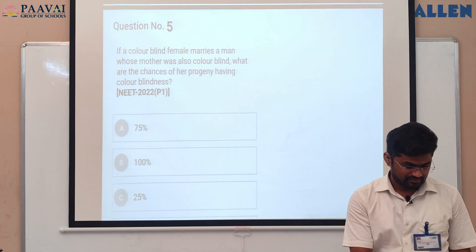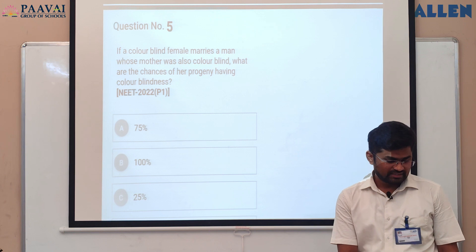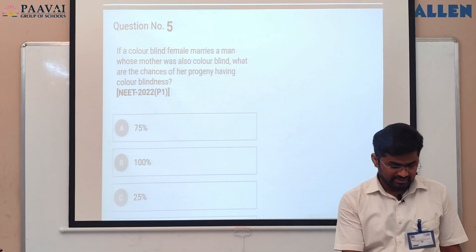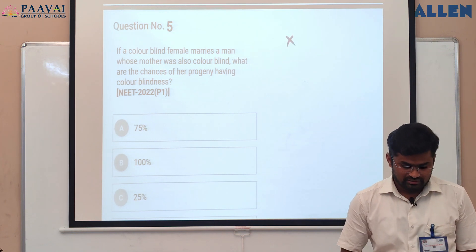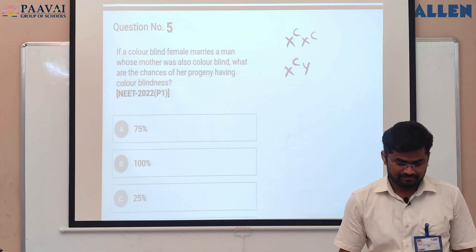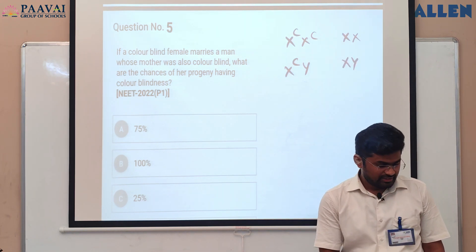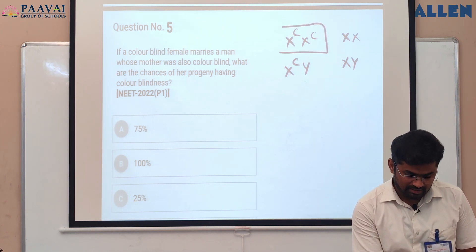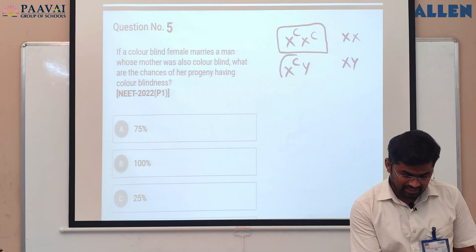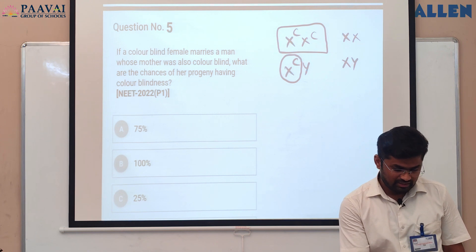Question number five: if a colour blind female marries a man whose mother was also colour blind, what are the chances of her progeny having colour blindness? For colour blindness, the abnormal alleles in case of females are X^c X^c, and for males, X^c Y. Normal alleles for females are XX and for males XY. The colour blind female's composition is X^c X^c. The man whose mother was colour blind received the abnormal X chromosome from his mother, so his composition is also X^c Y.